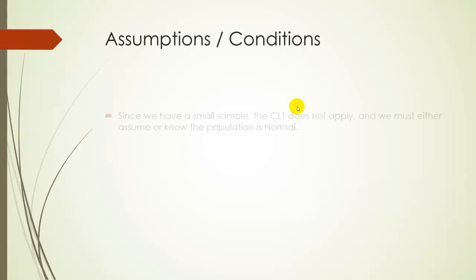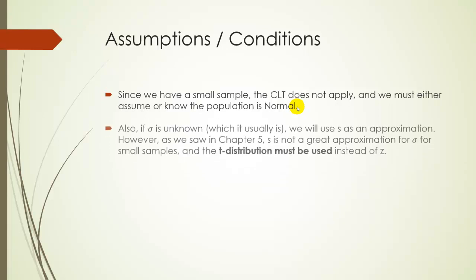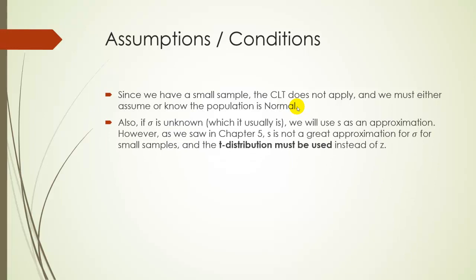So, our conditions. Since we have a small sample, we know the central limit theorem does not apply, because the central limit theorem only applies to large samples. So, we must assume or we must know that the population is normal. Also, if sigma is unknown, which is, of course, usually the case, we're going to have to use S as an approximation. But remember, it's not that great of an approximation if we have small samples. So, we have to use the T distribution instead of the Z.